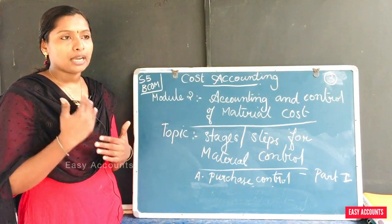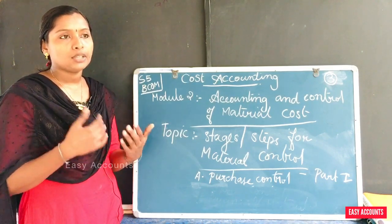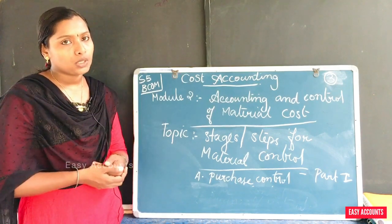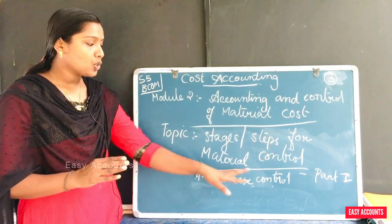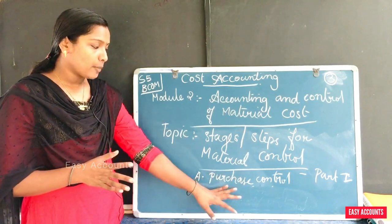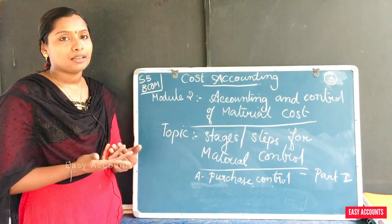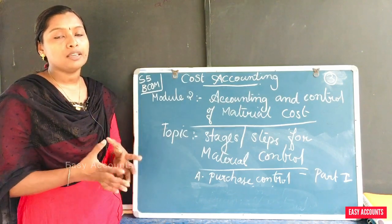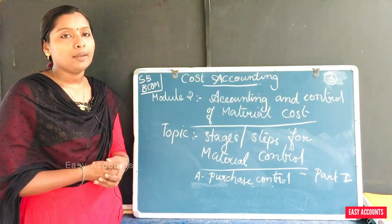This is a functional responsibility. The Purchasing Department helps with this. The goal is to reduce the cost of materials and ensure quality raw materials are available in the right quantity and at the right time. That is also part of controlling materials cost.